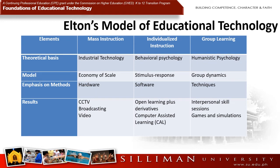Elton's model of educational technology shows the elements in mass instruction, individualized instruction, and group learning, and how they vary in terms of theoretical basis, model, emphasis, methods, and results. The main idea was that computers could provide individualized learning experiences, including interactive sequences consisting of problems or questions with appropriate feedback. All of these rested upon a sound theoretical basis of behavioral and early cognitive learning theory, and there was ample empirical evidence to show that it worked in terms of student achievement scores or learning outcomes. Of course, there are many ongoing debates about the strengths and weaknesses of those various methods.